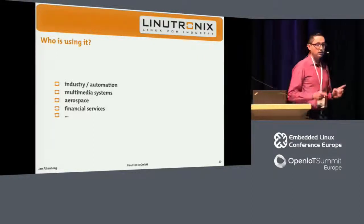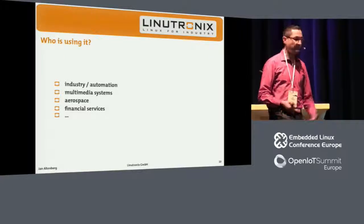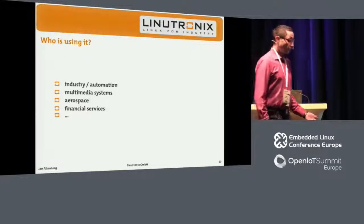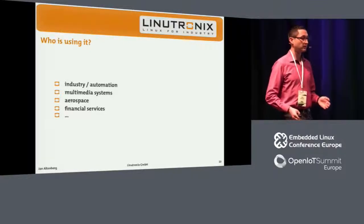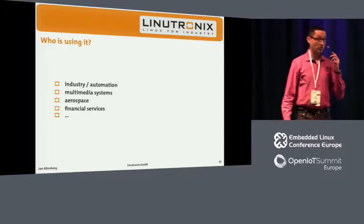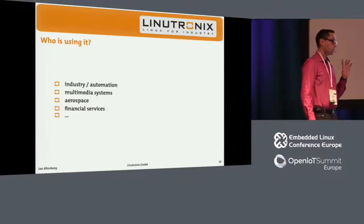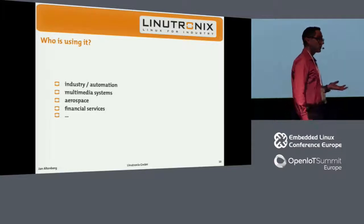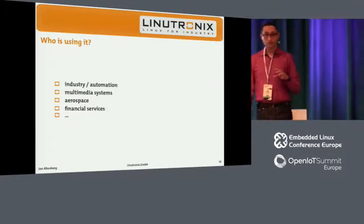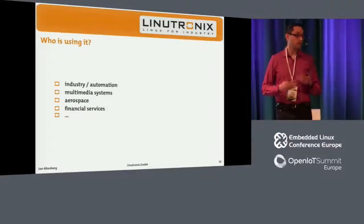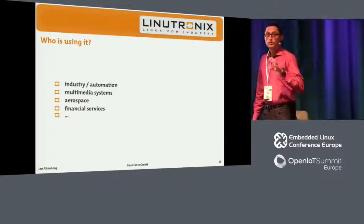When you get into a new technology, the first thing you do is check out who else is using it. For real-time Linux, we actually have many users in this world already using real-time Linux systems. We have a lot of industrial applications, the automation industry, automotive industry, multimedia systems, and even aerospace systems in non-safety critical applications. And we have financial services, which is pretty strange, but they run it on big server machines for high-speed trading and stuff. These guys need a real-time operating system, and they are actually using real-time Linux.